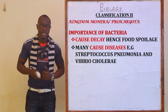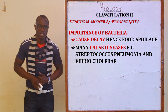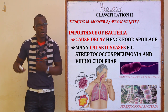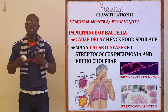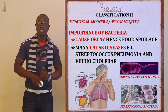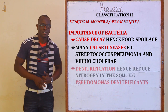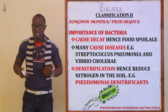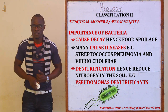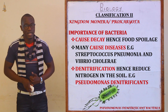How else are bacteria important in life? They cause decay, hence food spoilage. They mainly cause diseases — for example, Streptococcus pneumoniae causes pneumonia, and Vibrio cholerae causes cholera. They also facilitate the denitrification process, reducing nitrogen from the atmosphere — for example, Pseudomonas denitrificans bacteria.